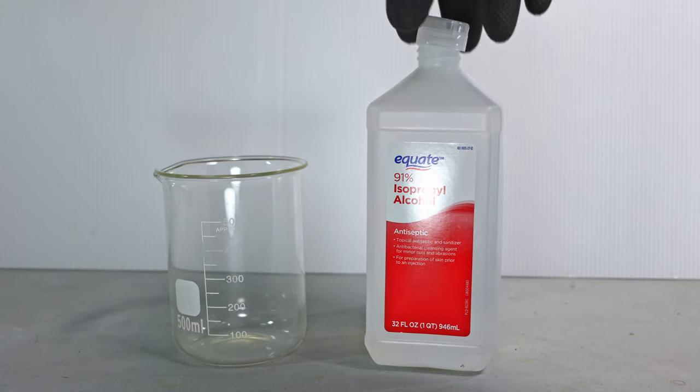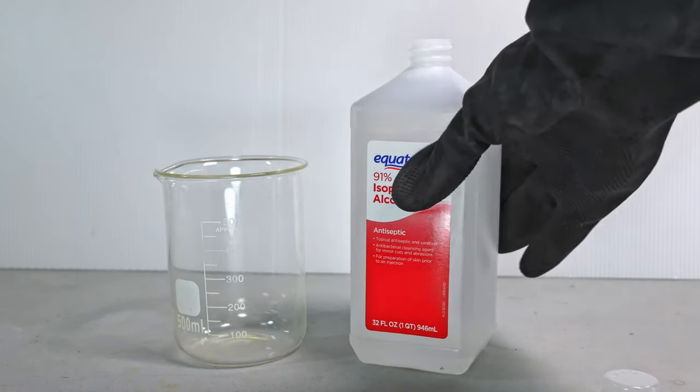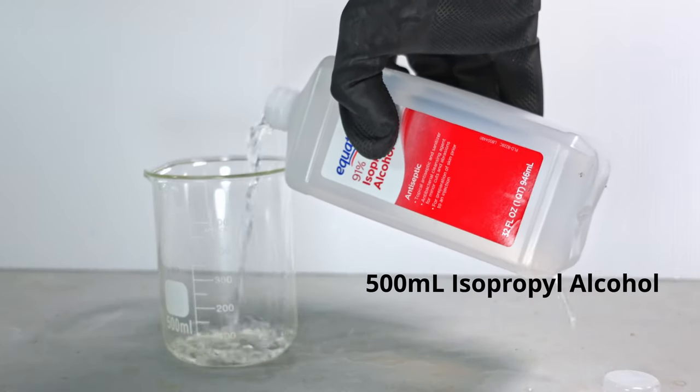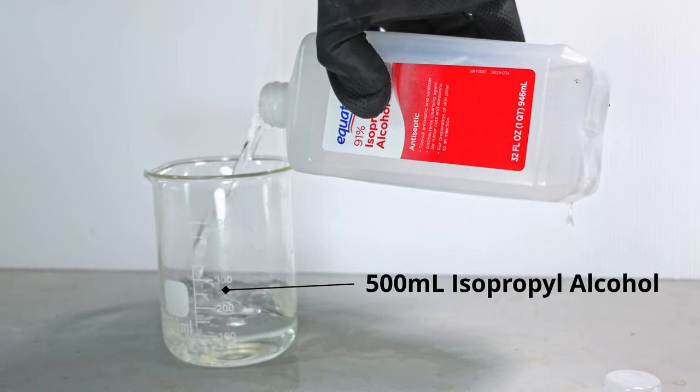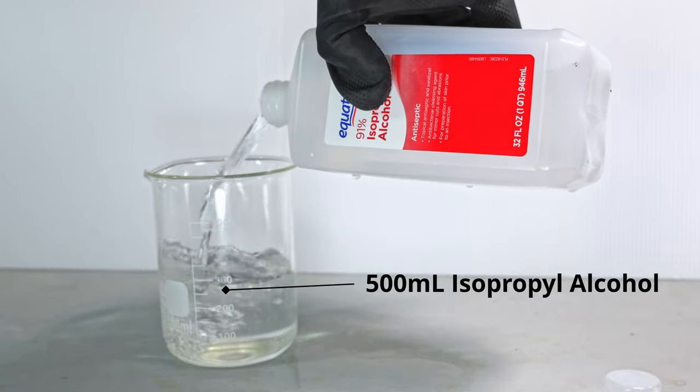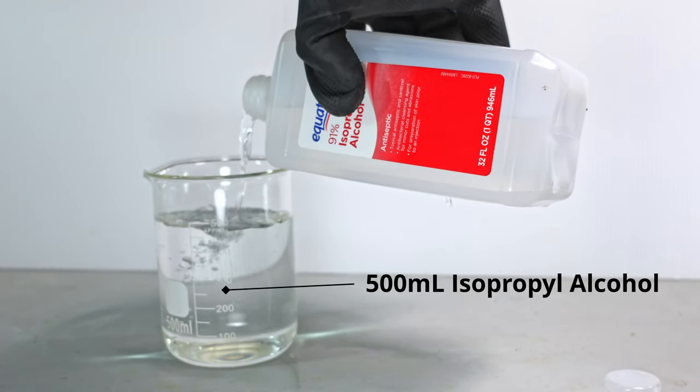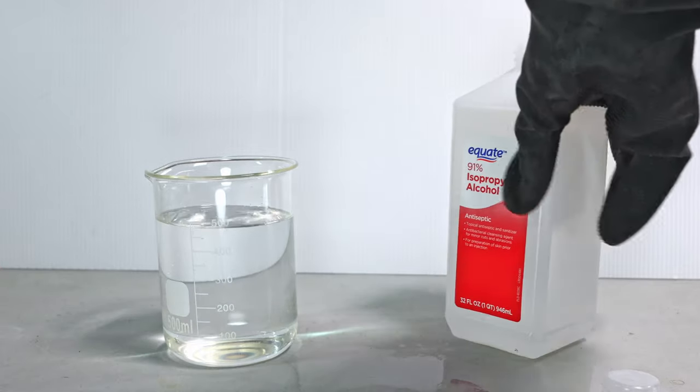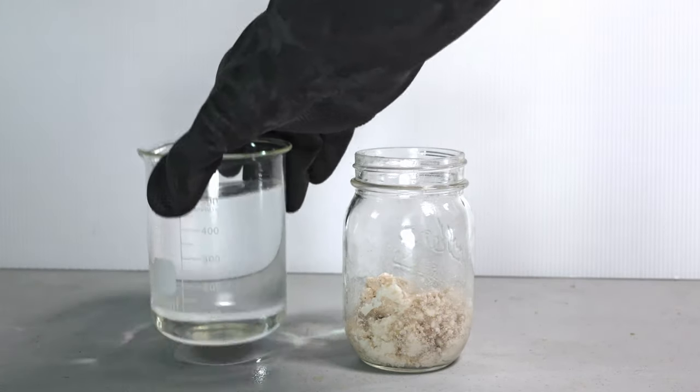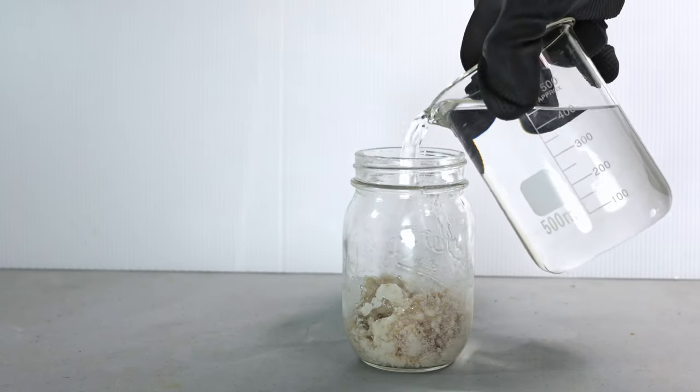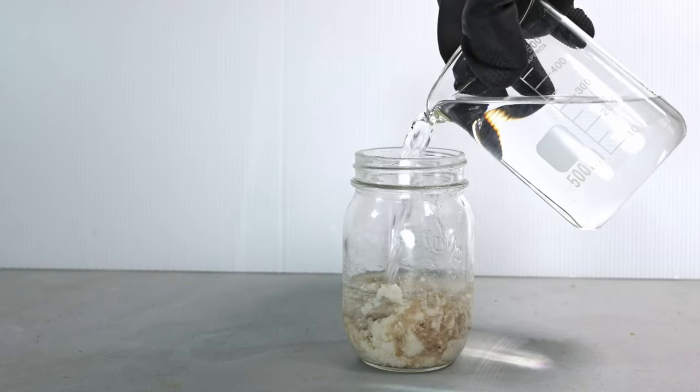The first thing we're going to do is add 500 milliliters of 91% isopropyl alcohol. Next, we're going to add this into our polyphosphoric acid. This will help it remain intimate.